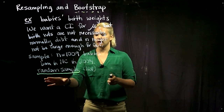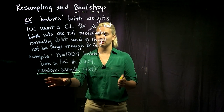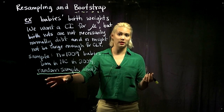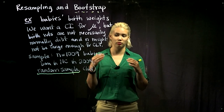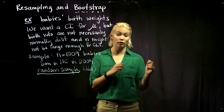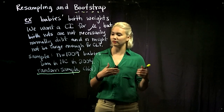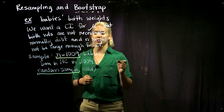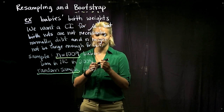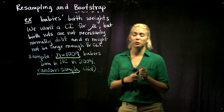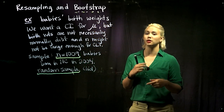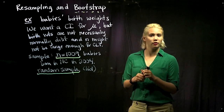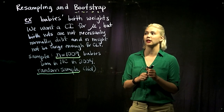We can essentially treat this original sample as a population and re-sample from it with replacement. We're simulating sampling from the original population again, which means we need to create these fake, simulated samples. Our original sample size was n equals 1,009, so we want to keep taking samples of 1,009 babies and calculate the mean birth weight for each sample.